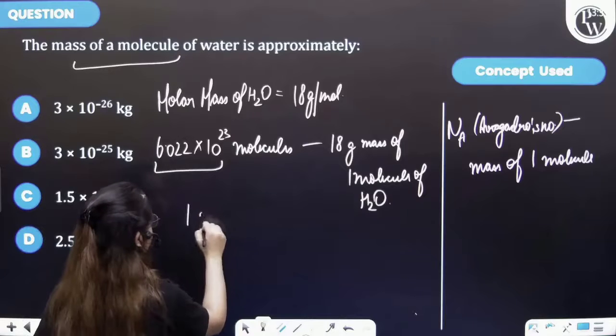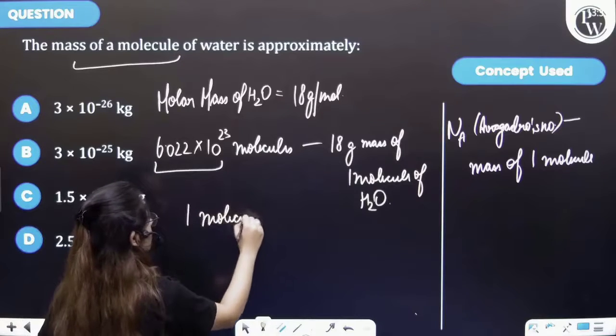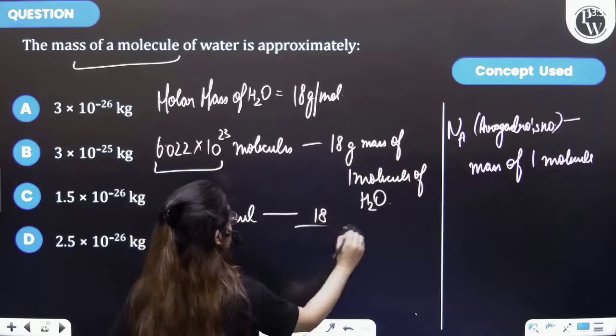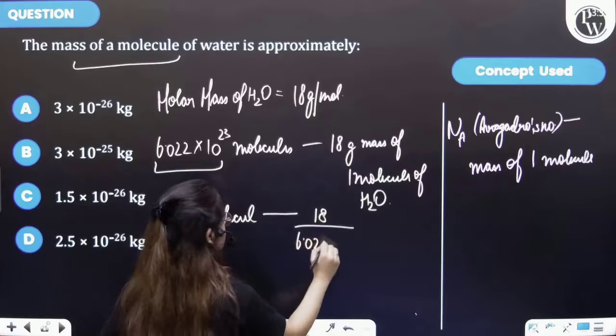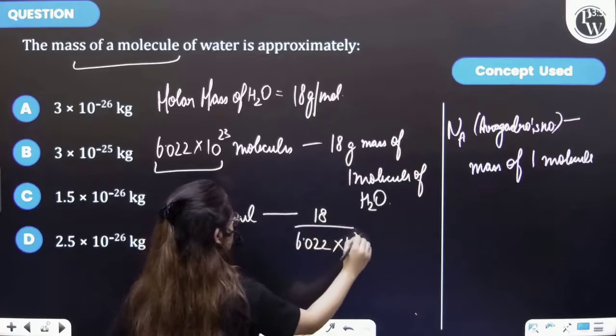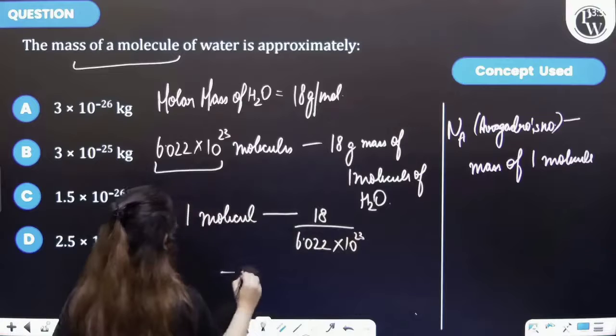It will be equal to 18 upon 6.022 into 10 raised to the power 23. So it will come out